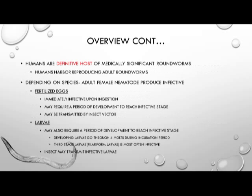Humans are the definitive host of the medically significant roundworms, meaning they harbor the reproducing adult roundworm. Depending on the species, the adult female nematode can produce infective fertilized eggs or infective larvae. Fertilized eggs can be immediately infective upon ingestion, or may require a period of development to reach the infective stage, and can also be transmitted by an insect vector. The larvae may also require a period of development to reach the infective stage, going through four molts during incubation, with the third stage filariform larvae most often being infective. Larvae, too, may require an insect vector for transmission.